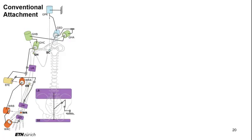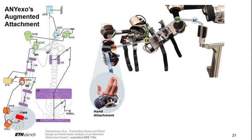Conventional attachment systems use one contact point per segment on the arm, which leads to weak constraints between the human and the robot.